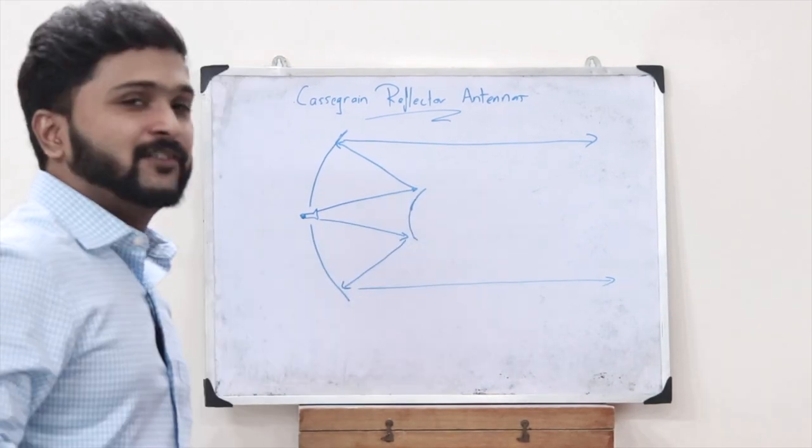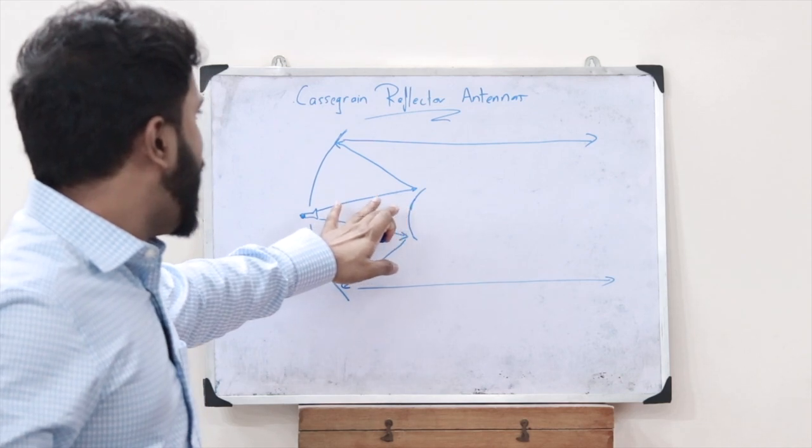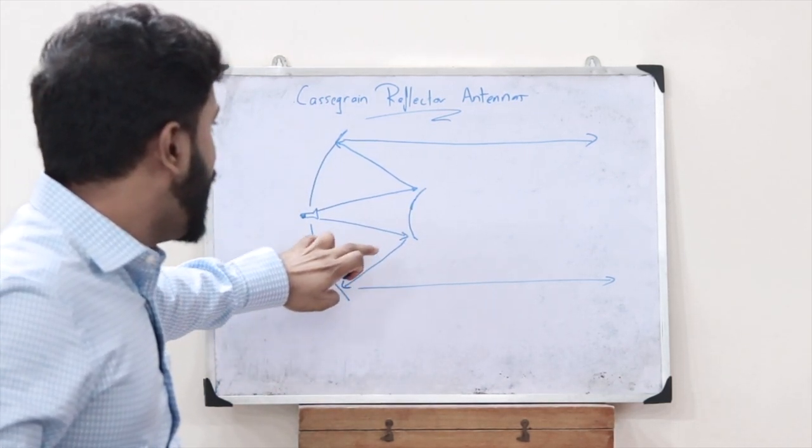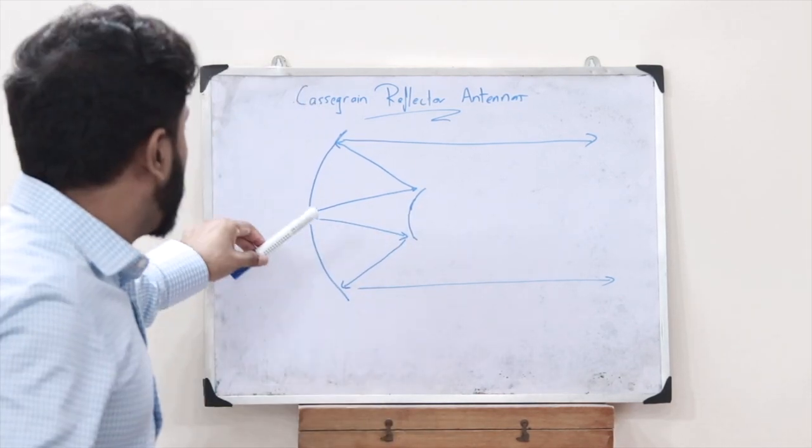So it has a hyperbola and a parabola where the primary reflecting surface is a parabola and the secondary reflecting surface is a hyperbola.